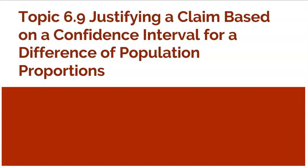We already learned how to find a confidence interval for a difference of population proportions. Now we're going to dive a little bit deeper and look at the details a little bit more. A lot of them should sound familiar from when we talked about confidence intervals for a single population proportion — now we're just directing that towards the difference of population proportions.